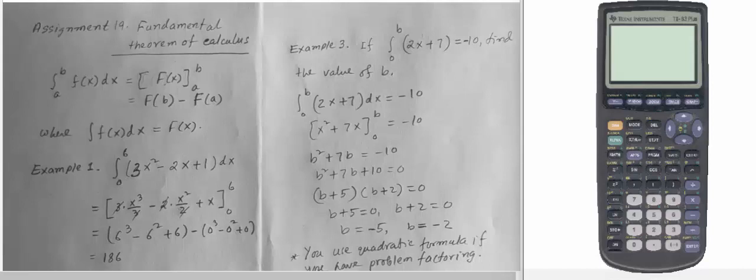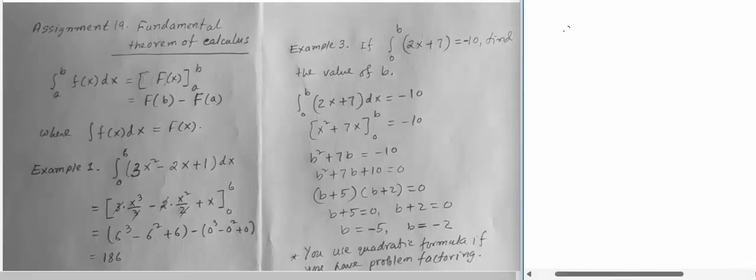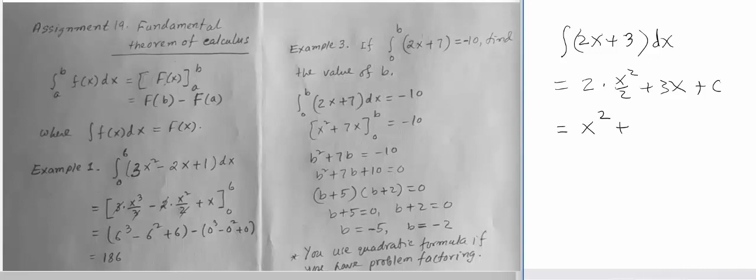The fundamental theorem of calculus: if you have a function like 2x plus 3 and you want to take the integral, we know it is 2 times x squared over 2 plus 3x, and then we add a constant. The simplified version is x squared plus 3x plus c.